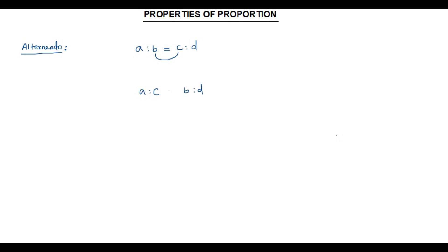These two ratios will be in proportion. If two ratios are in proportion and I interchange the two middle terms, the two new ratios we get will also be in proportion. This property is called alternando.